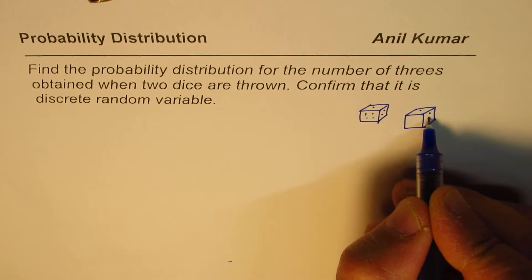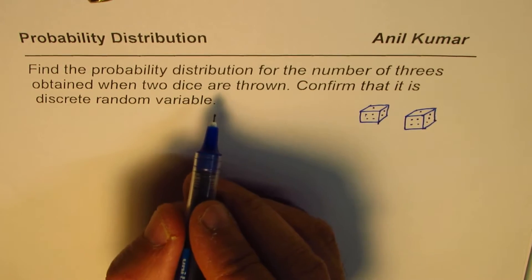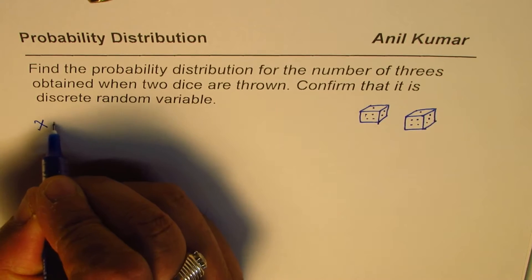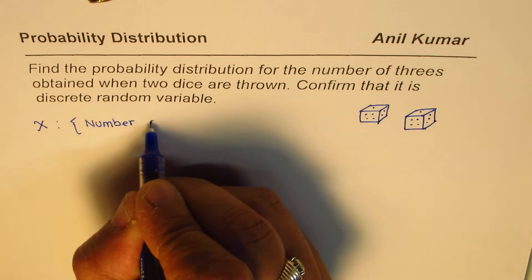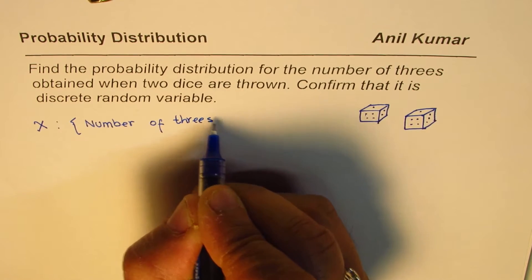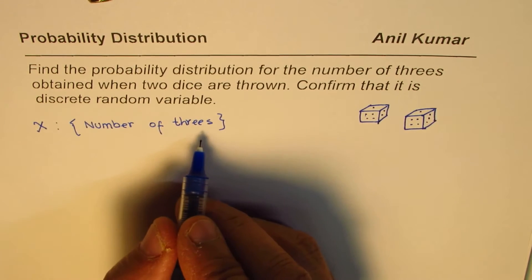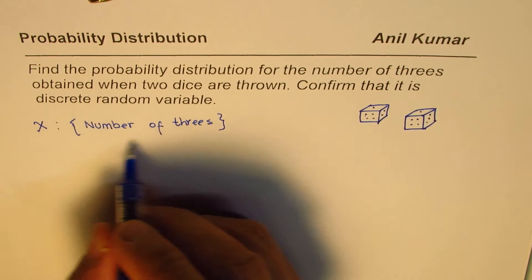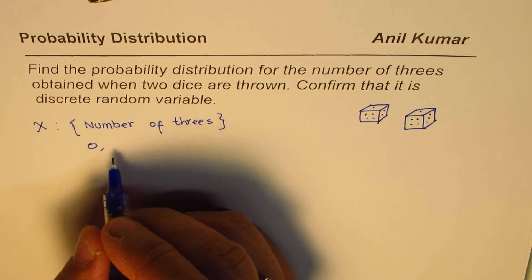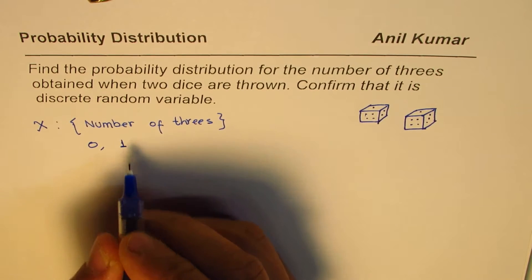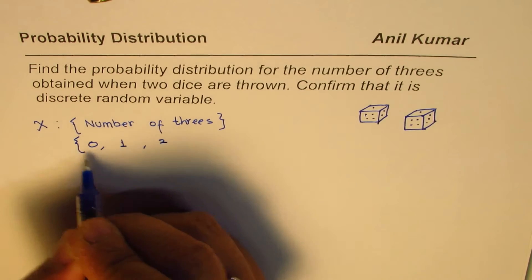Let us define the random variable first. Let X be the random variable representing the number of threes when two dice are thrown. The possible values of X are: zero — none of them is a three; one — one of them is a three; or two — both are three. So the outcomes are 0, 1, and 2.